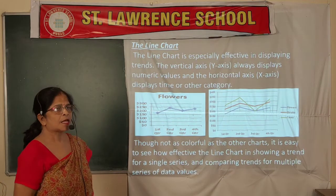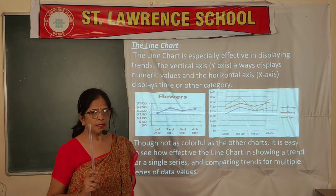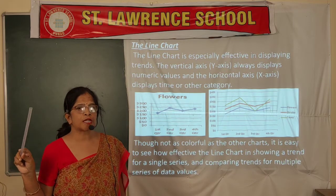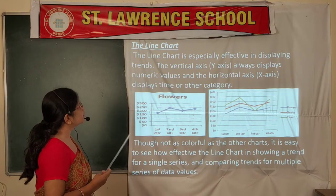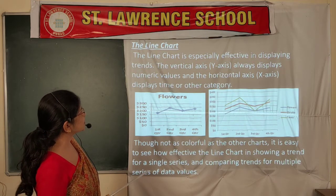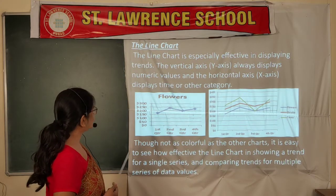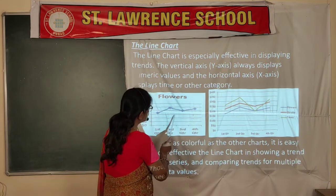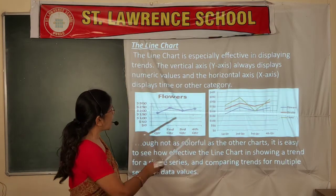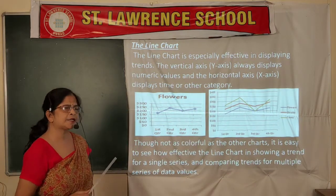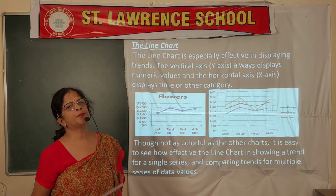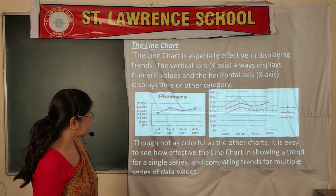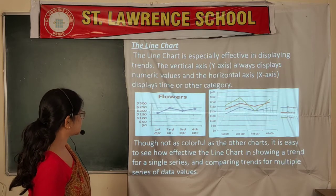The next is the line chart. Similar to using graph paper in maths — where you mark points on X and Y axes and draw a line to join them — the line chart is especially effective in displaying trends. The vertical axis always displays numeric values and the horizontal axis represents categories. Two charts are shown: one with a single data series and one with multiple data series. It is easy to see how effective the line chart is in showing a trend for a single series and comparing trends for multiple series of data values.